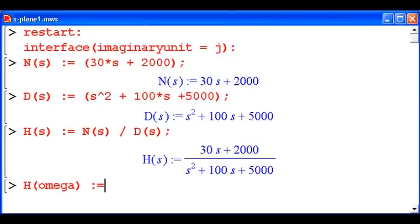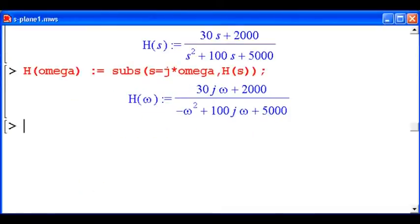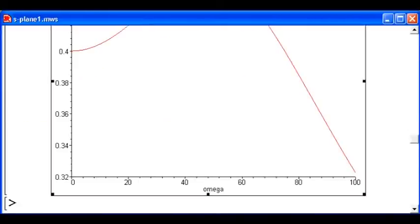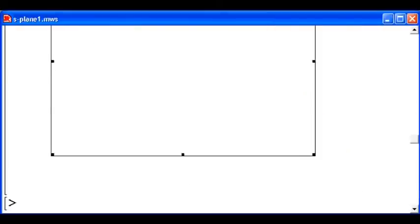So now I want to define the steady state response. So I'll call that H of omega. And I get that by substituting J omega for S into H of S. Next, I can plot the absolute value of my function. And I'll do that over the range omega equals 0 to 100 radians per second. I'll make this plot a bit smaller so we can fit it on the screen.